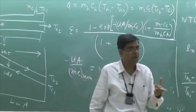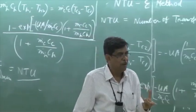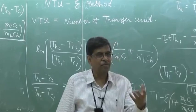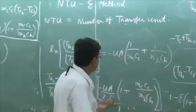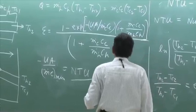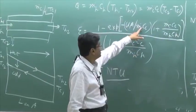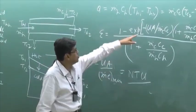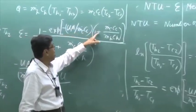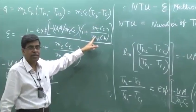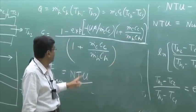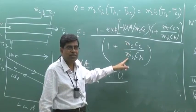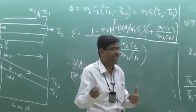So in a generic formula, I can write in terms of M dot c minimum. This will interchange: if M dot h c h is the minimum, then NTU is minus U·A by M dot c minimum. This will be NTU, and this will be 1 plus M dot c minimum by M dot c. Similarly, it will be 1 plus M dot c minimum by M dot c — just interchange.